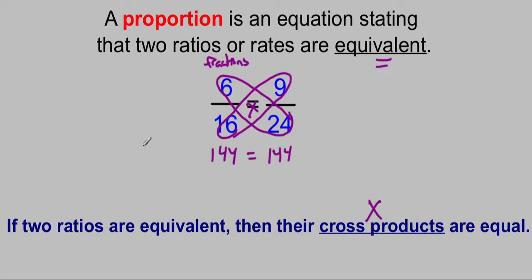Think of it as one-half and two-fourths, something we know is equivalent. Two times two is four. One times four is four. Those are equal, so we know those are proportional. They are equivalent to each other.